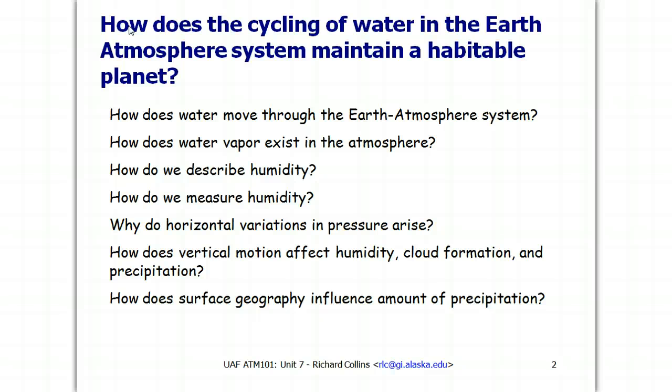In this unit, we will look at how the pattern of precipitation occurs and the general principles at work, as well as some of the unique properties of water. The overarching question is how does the cycling of water in the Earth atmosphere system maintain a habitable planet? And what is the pattern of that habitability in terms of precipitation?